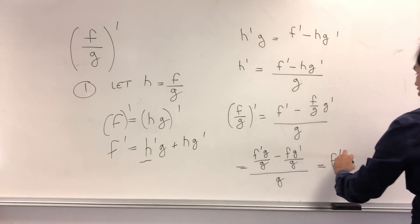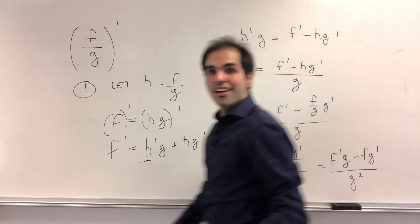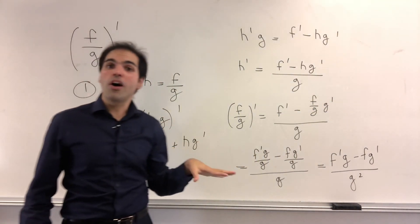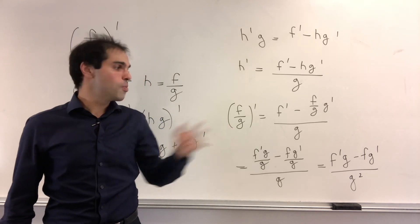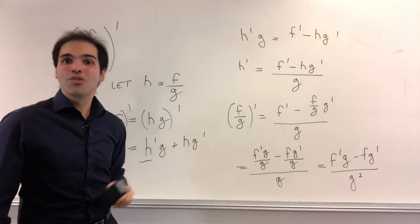And in the end, the beautiful thing is it gives you precisely the quotient rule. So f prime g minus f g prime over g squared. How cool is that, which again kind of shows the product rule, the Prada loop, is more powerful than the quotient rule, because we used Prada to prove quotient.